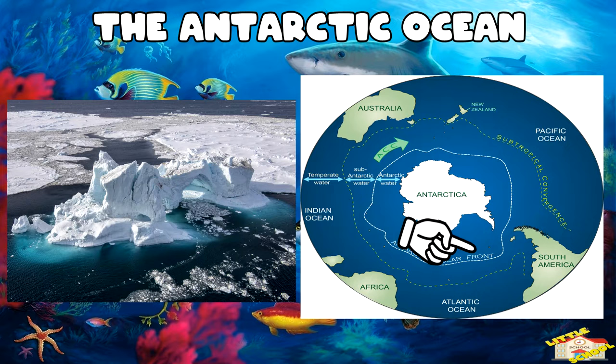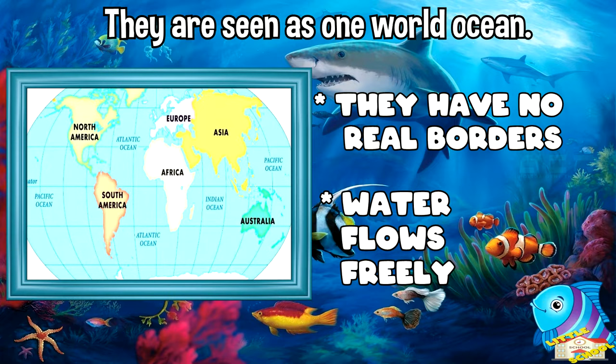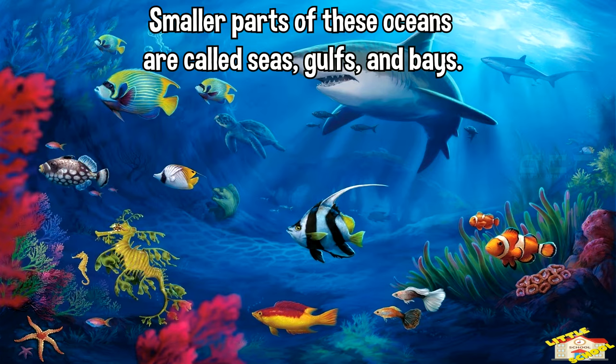Together, they can be seen as one world ocean because they have no real borders and water flows freely between them. Smaller parts of these oceans are called seas, gulfs, and bays.